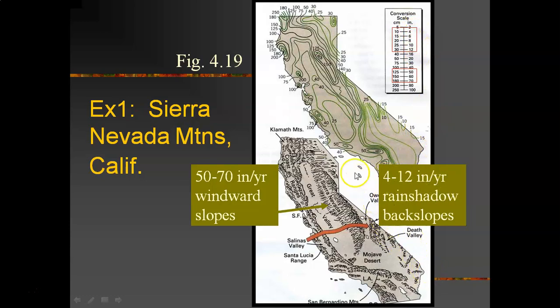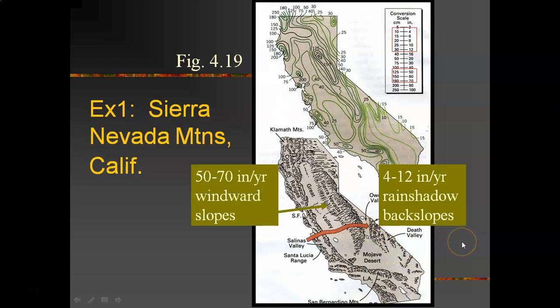You wind up with really dry conditions. The state immediately to the east of California is Nevada — and Nevada's climate is a desert. It's a rain shadow desert. The Mojave Desert is a rain shadow desert with the coastal mountains, Death Valley for sure is a rain shadow desert, and the entire state of Nevada is a rain shadow desert.